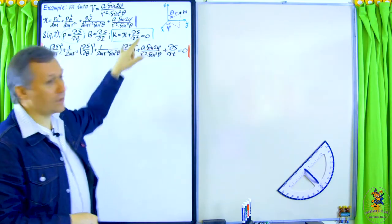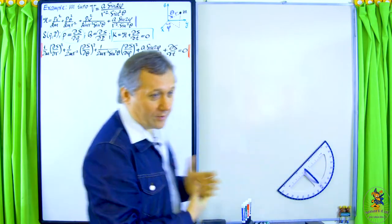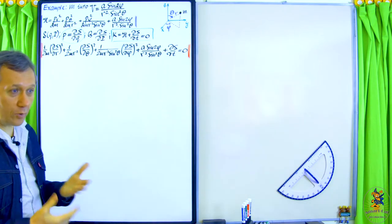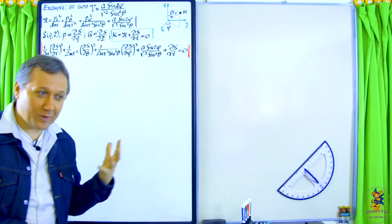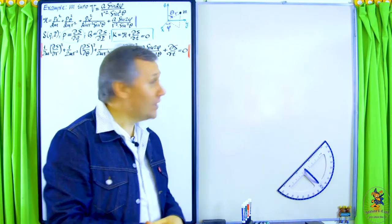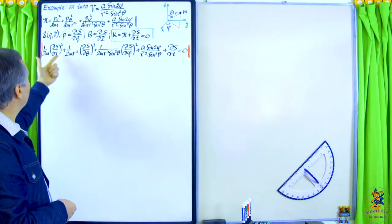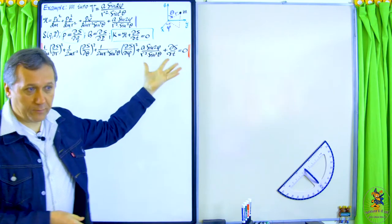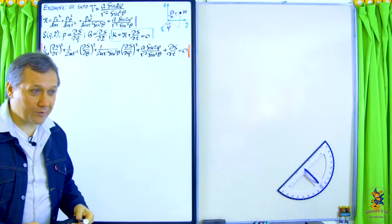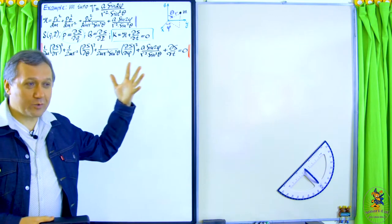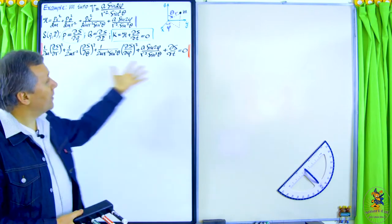We plug everything into that expression and end up with the Hamilton-Jacobi equation — the Hamiltonian where all the p's are replaced with ∂S/∂q: ∂S/∂r, ∂S/∂θ, ∂S/∂φ instead of pᵣ, pθ, pφ. And we add ∂S/∂t. It can be solved only if you can separate variables; otherwise it's a first-order PDE in four variables: r, θ, φ, and t.